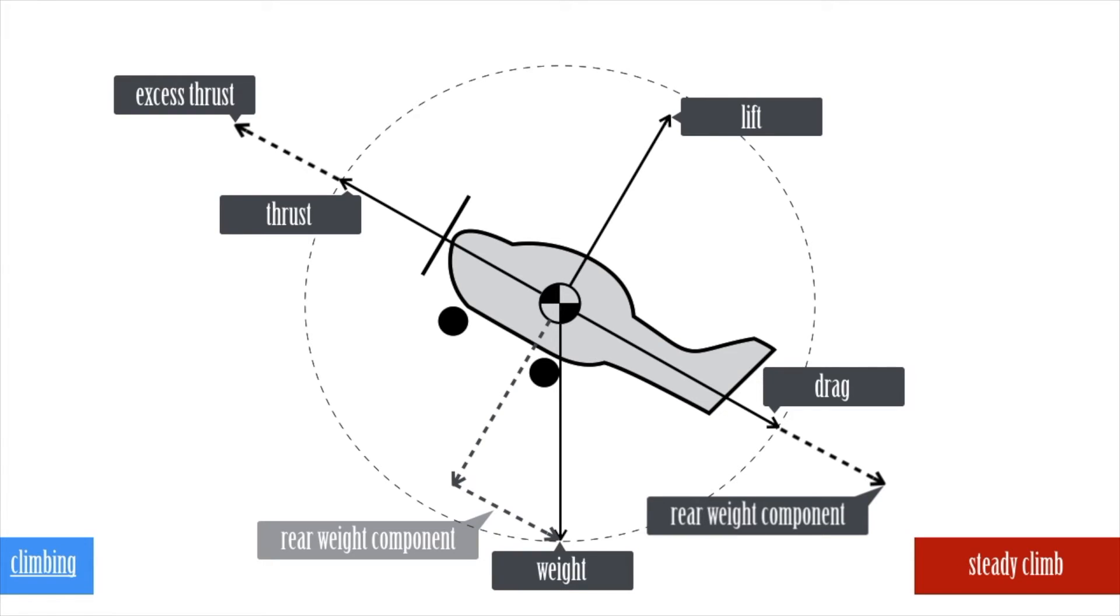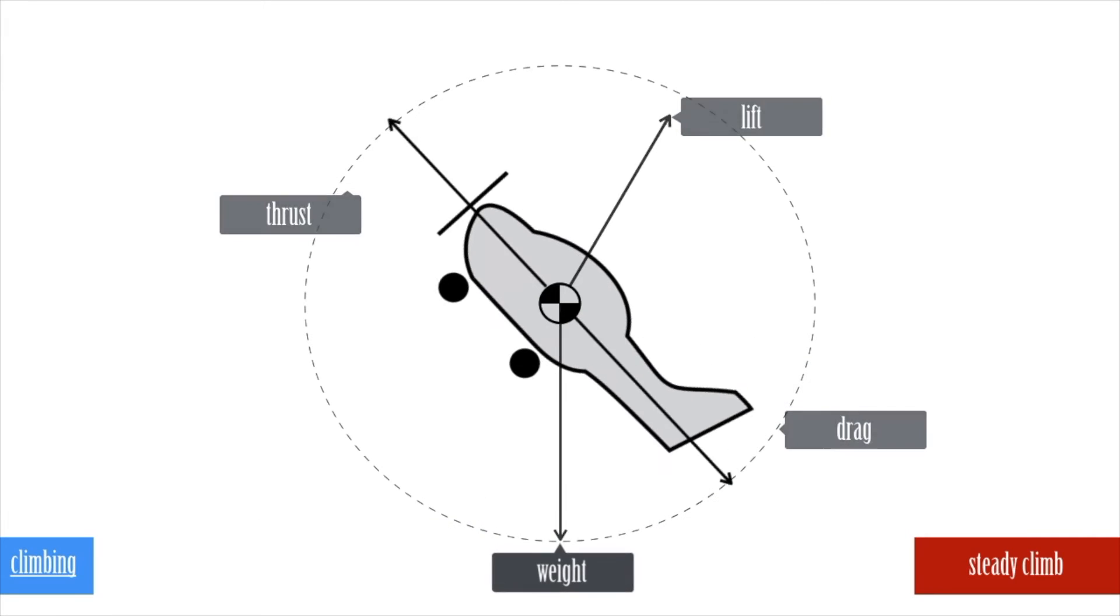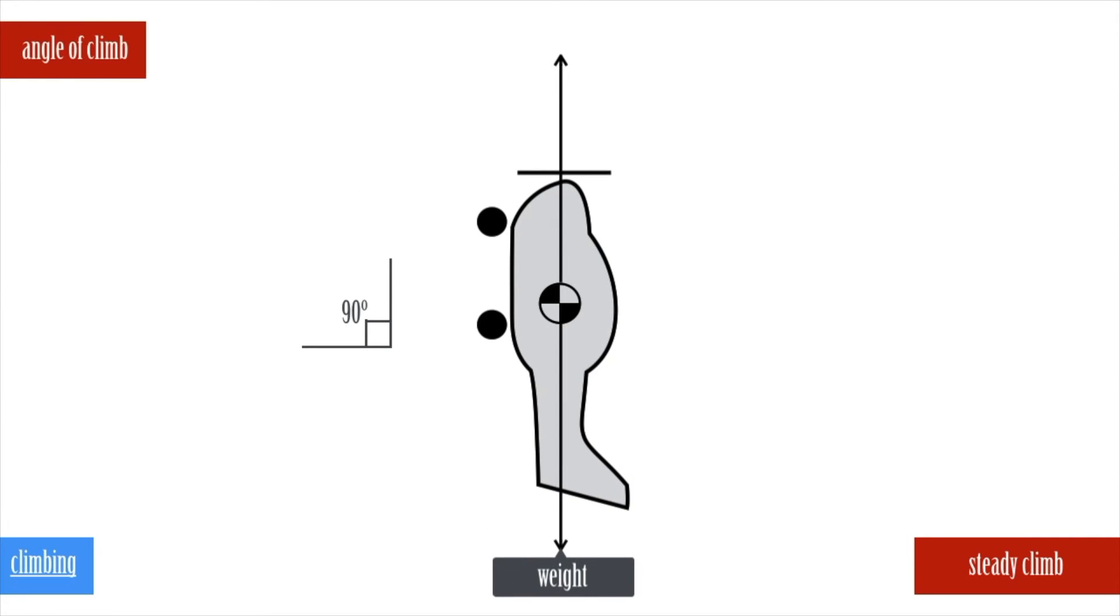Are you still not convinced that lift is smaller in a climb? Imagine that this aeroplane is capable of climbing at the ultimate 90 degree angle of climb. Now you can see how it becomes about the excess thrust, not lift.